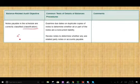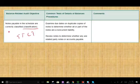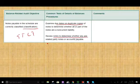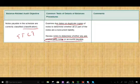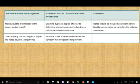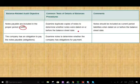Classification, we want to make sure if it's short-term or long-term, notes payable schedule are correctly classified. Examine the due dates on duplicate copies of the note to determine whether it's current or non-current. And review the notes to determine whether there are any related party notes or accounts payable. When it comes to classification, is it related party? If it's a related party, we should have a disclosure about it. Classify it separately and have a disclosure. Cutoff, notes payable are included in the proper period. Include duplicate copies of the note to determine the date of the note. And based on that, you would know if it should be on the balance sheet or not. Notes should be included as a current period liabilities when dated on or before the balance sheet date.